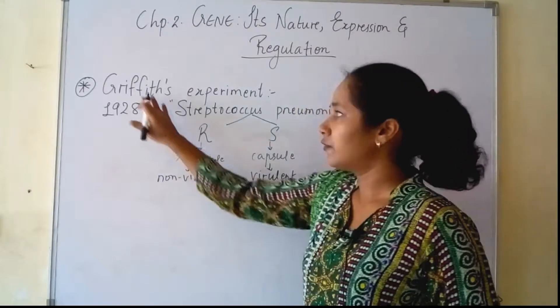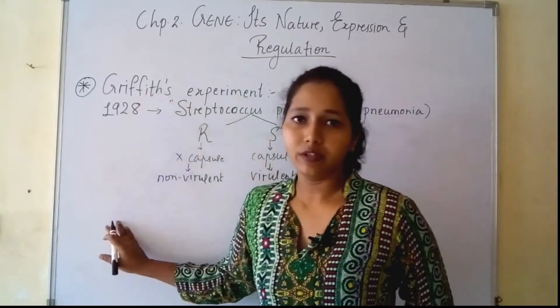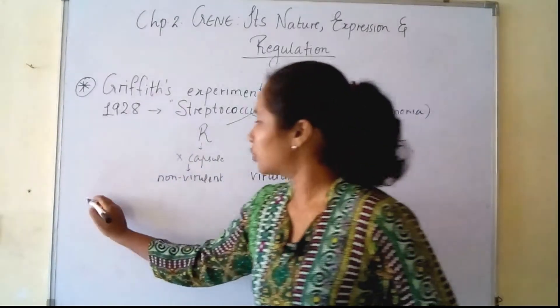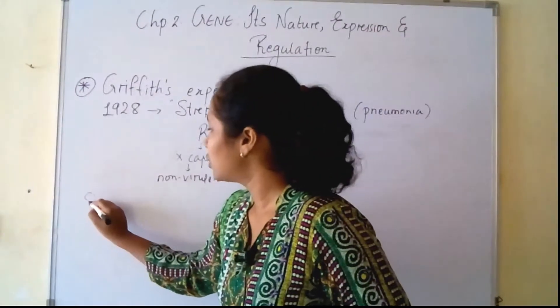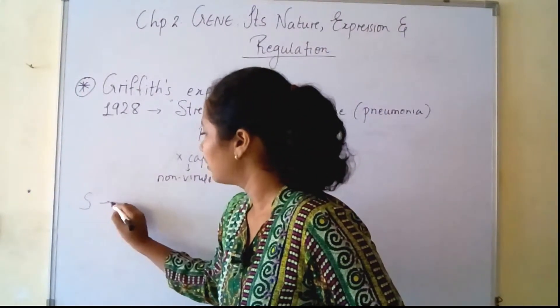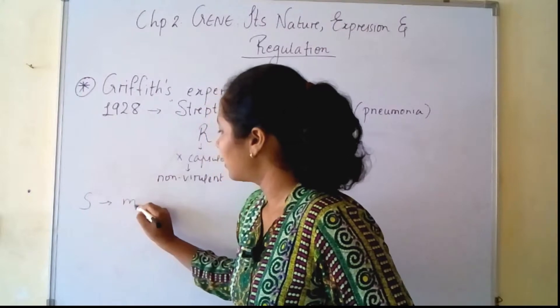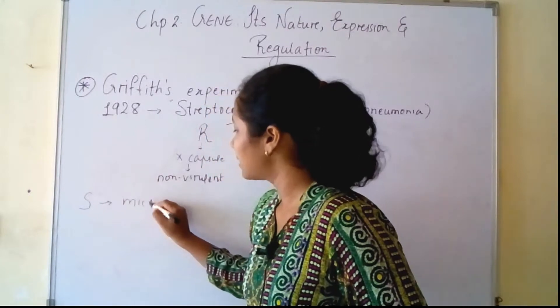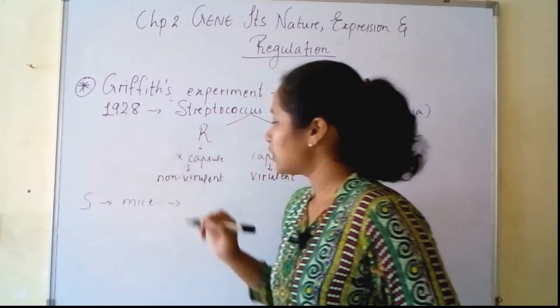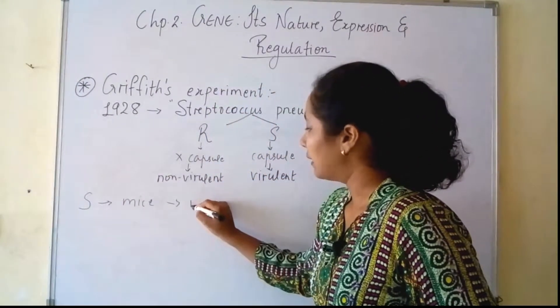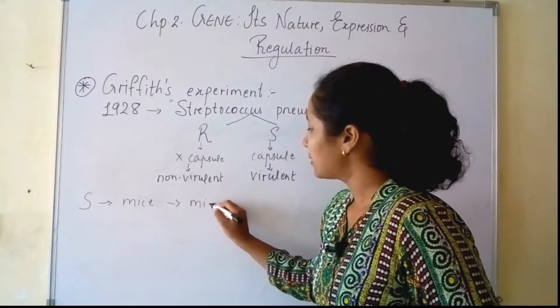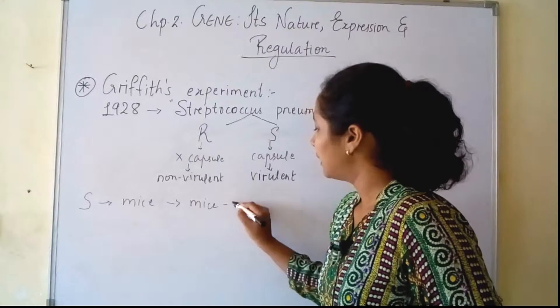What Griffith did was he took the smooth strain, injected it into mice, and he saw that the mice died.